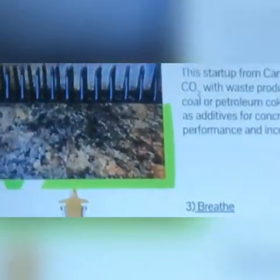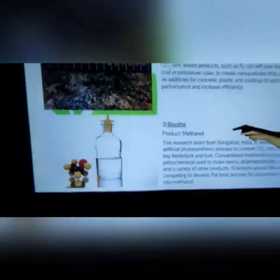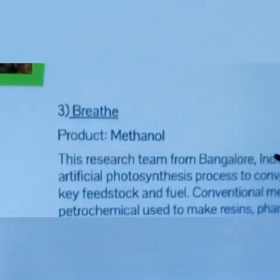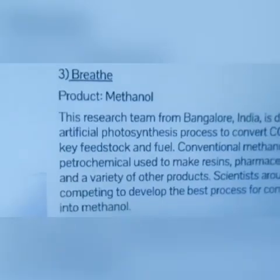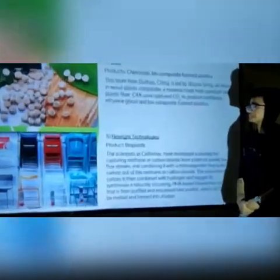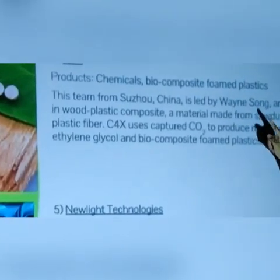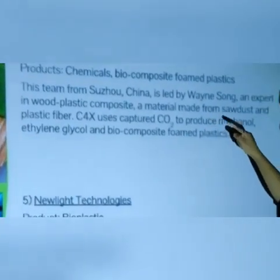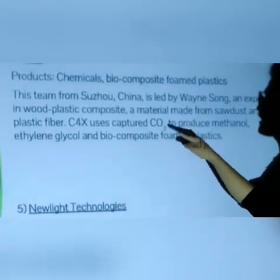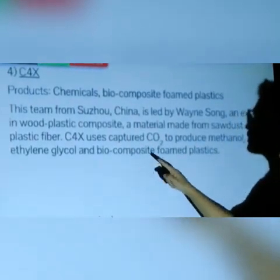Another alternative is methanol. A team from Bangalore is developing an artificial photosynthesis process to convert CO2 into methanol, a key feedstock and fuel. The fourth alternative is biocomposite foam plastics, in which a material is made from sugars and plastic fiber. This company uses captured CO2 to produce micronol, ethylene glycol, and biocomposite foam plastics.